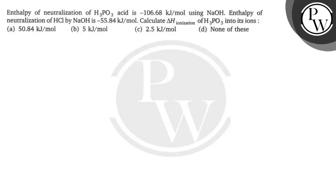Hello, let us read this question. Enthalpy of neutralization of H3PO3 acid is minus 106.68 kilojoules per mole using NaOH. Enthalpy of neutralization of HCl by NaOH is minus 55.84 kilojoules per mole. Calculate delta H ionization of H3PO3 into its ion.